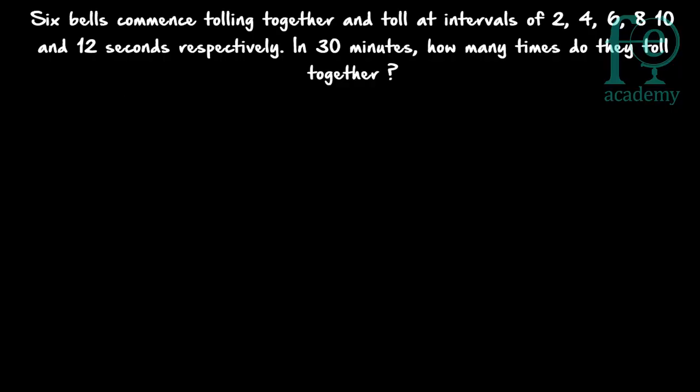Hi friends, welcome to today's class. Today's question is: six bells commence tolling together and toll at intervals of 2, 4, 6, 8, 10, and 12 seconds respectively. In 30 minutes, how many times do they toll together? So how to do this — there are six bells and they are commencing, they are tolling together.